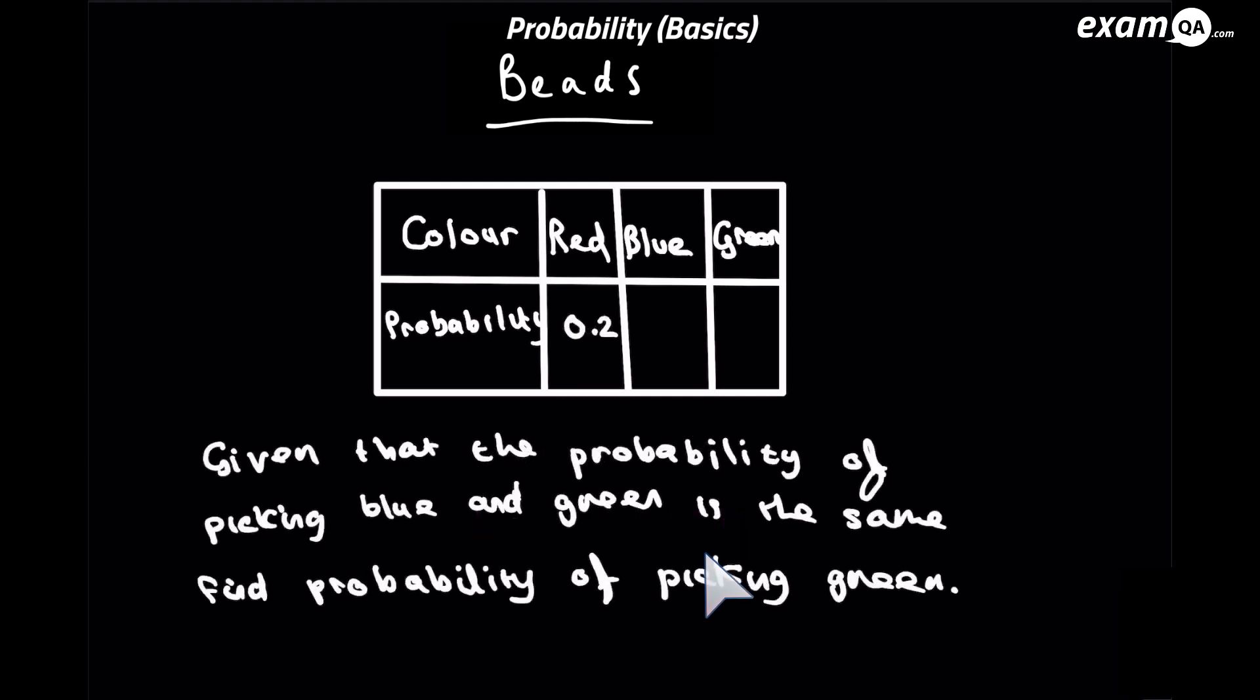So in this question, it says, given that the probability of picking blue and green is the same, find out the probability of picking a green. Now we're going to use that rule again, that probabilities add up to 1.